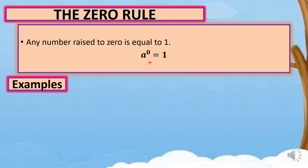Example number one: two raised to zero. By rule, our answer is one. Example number two: how about if a variable is raised to zero? So we have M raised to zero — by rule, our answer is automatically equal to one.